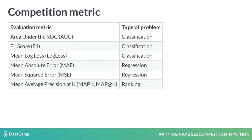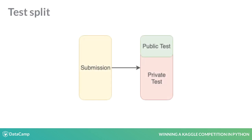Here is a list of metrics most frequently used in competitions and the type of problems they appear in. While preparing the submission, we have to make predictions for all the observations in the test set. However, Kaggle internally splits test data into two subsets: public and private.